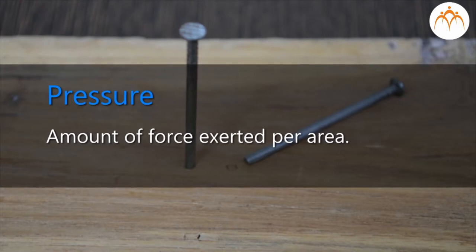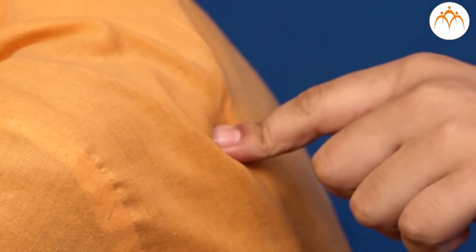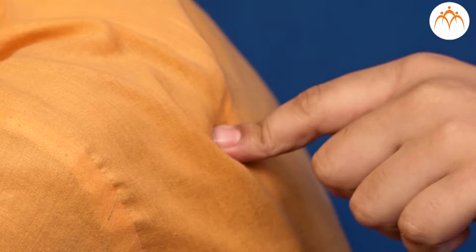It is the amount of force exerted per area. Pressure means how much one object is pushing on another object. It is usually more convenient to use pressure rather than force to describe the influence on other objects.